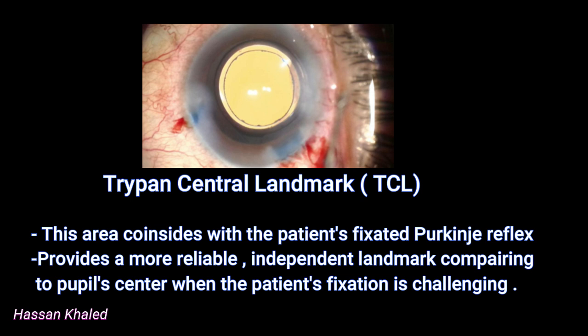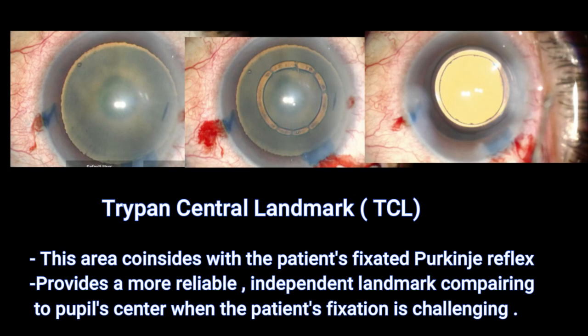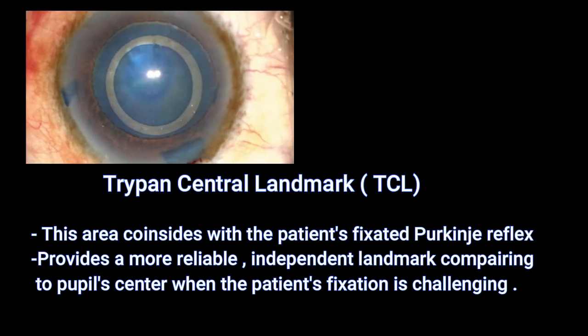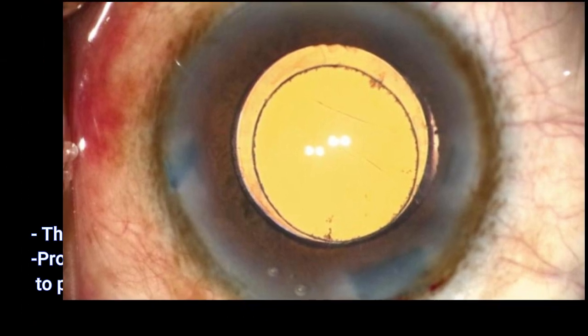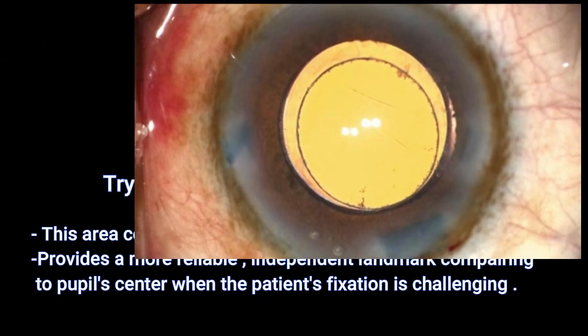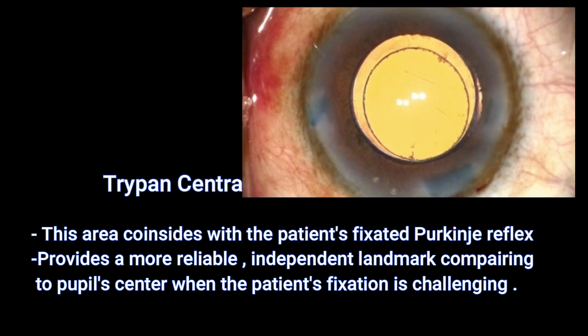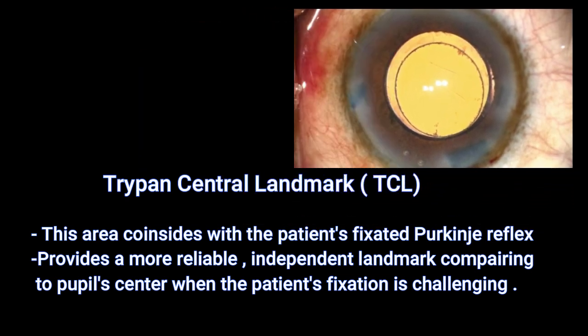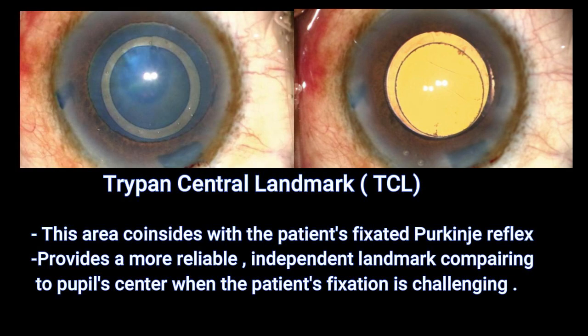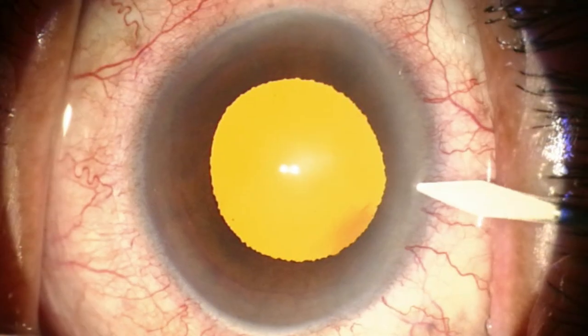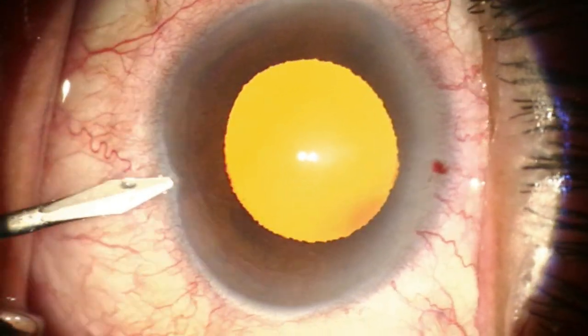However, in this picture, we can see that the capsulorrhexis is eccentric with the tri-band central landmark. Look at the result: we can see it is also eccentric with the optic of the IOL. The overlapping is good in the superior part; however, it's not good in the inferior part of the IOL.